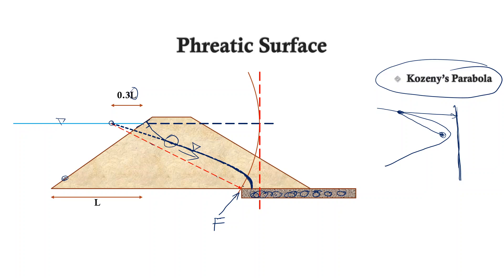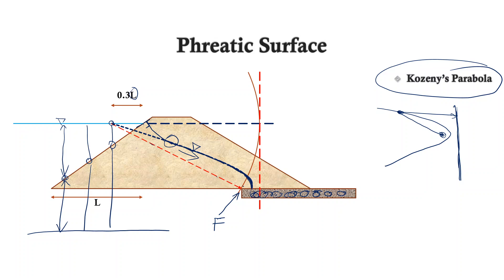We can say this because if we measure the piezometric head at any point along that upstream surface, we get the same value. The piezometric head is the summation of pressure head — given by the water above any point on the surface — and datum head, which is its height from some arbitrary datum. So every point along this upstream slope has the same piezometric head, meaning this line is itself an equipotential line.